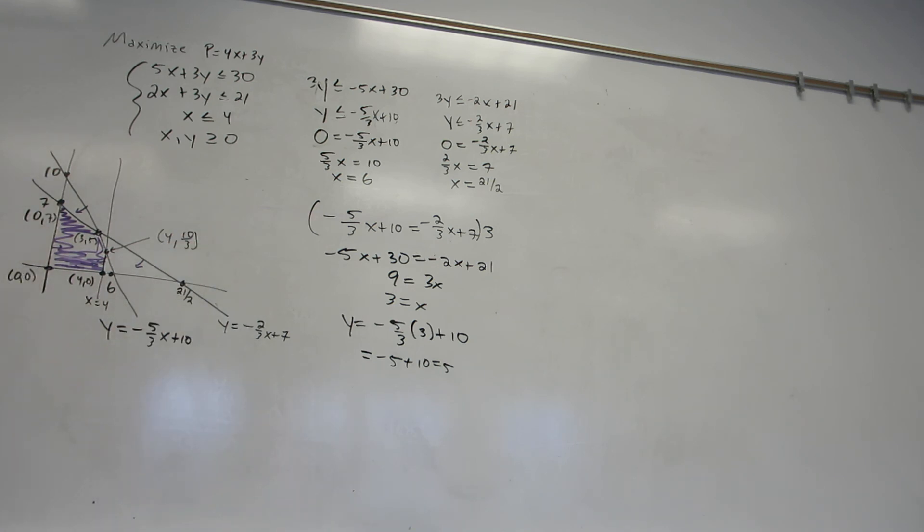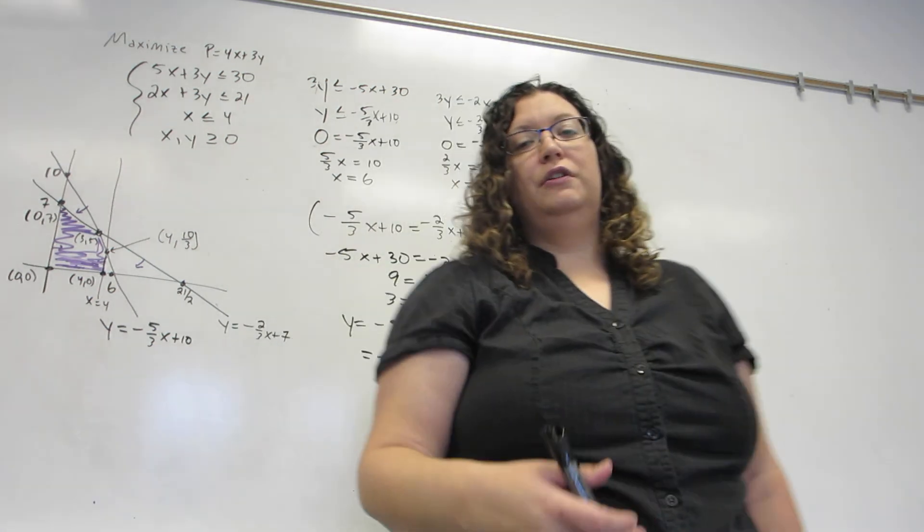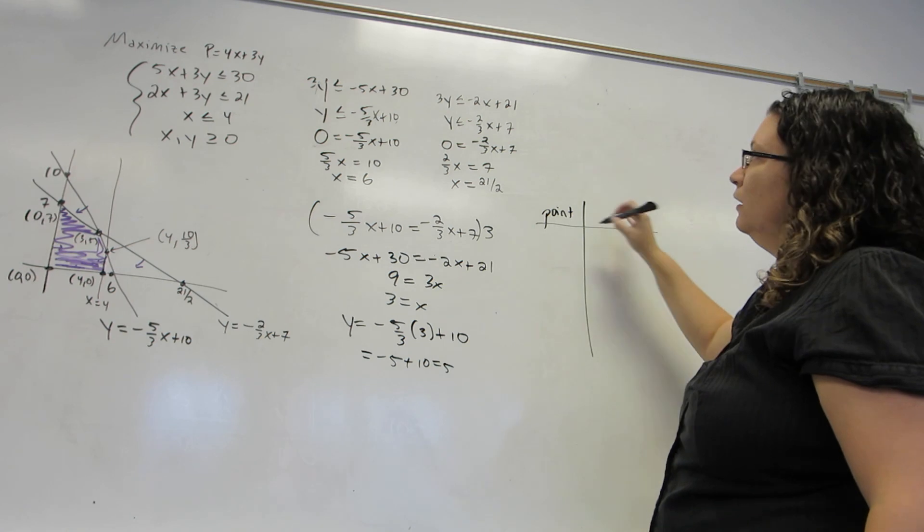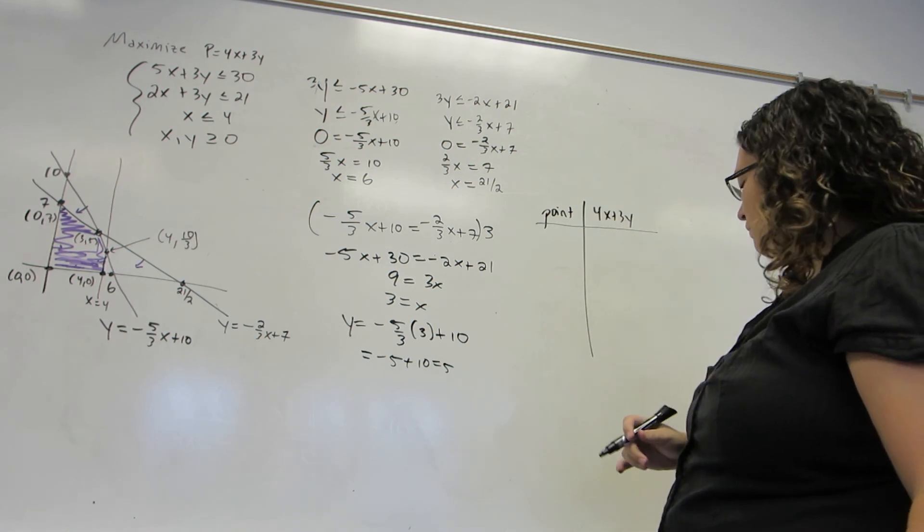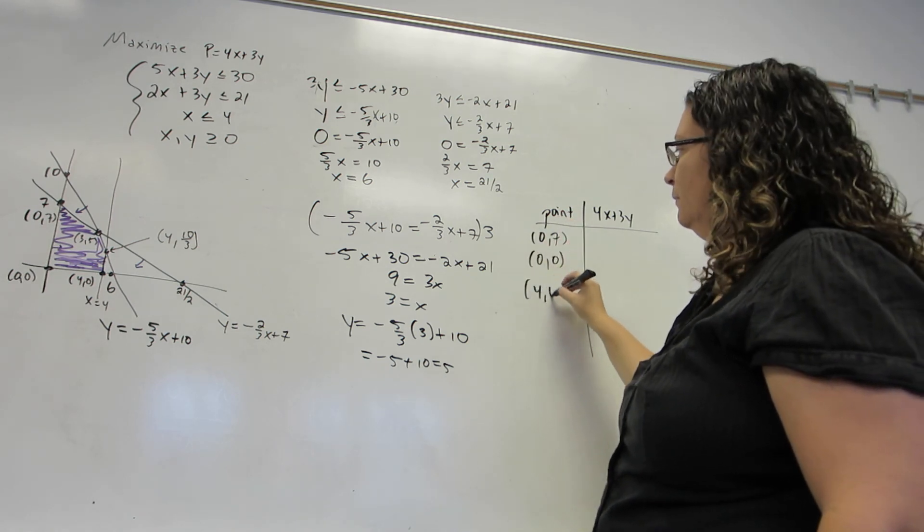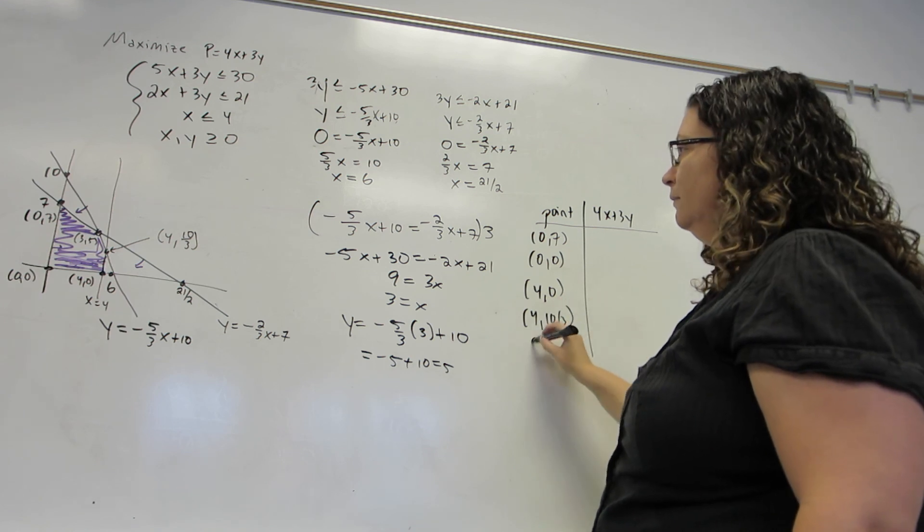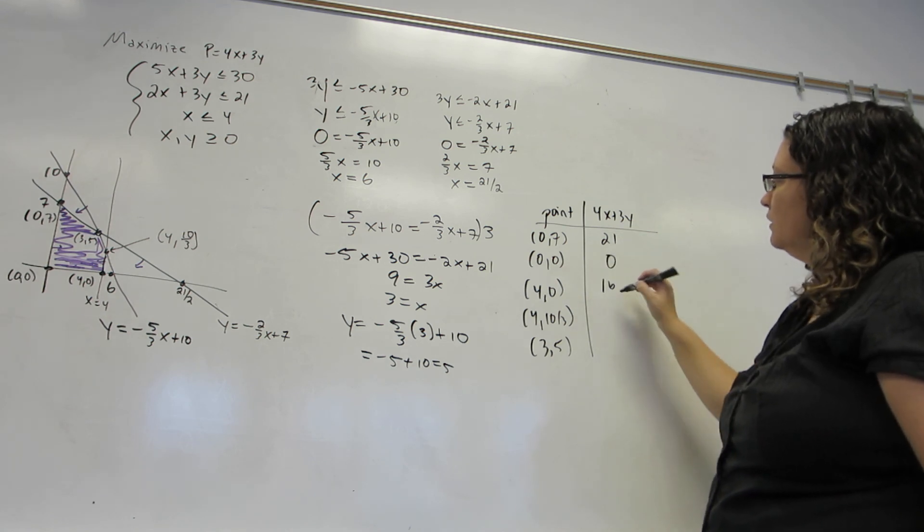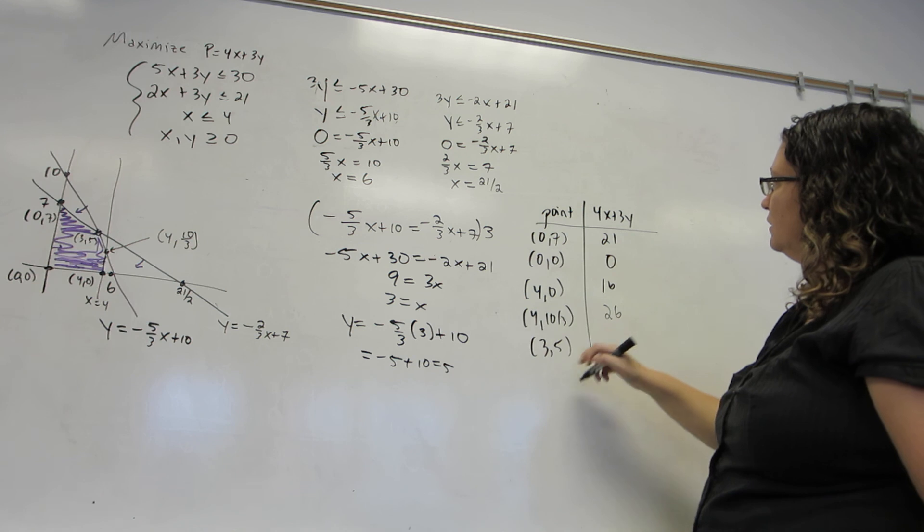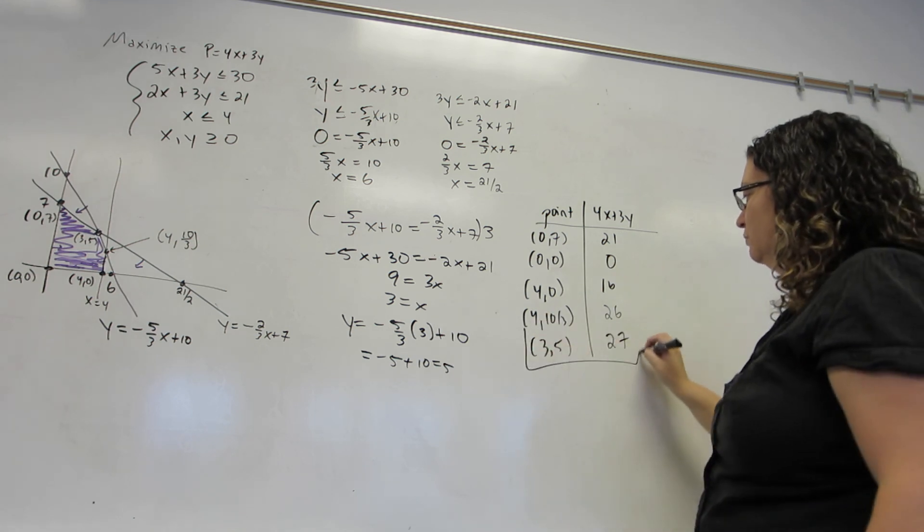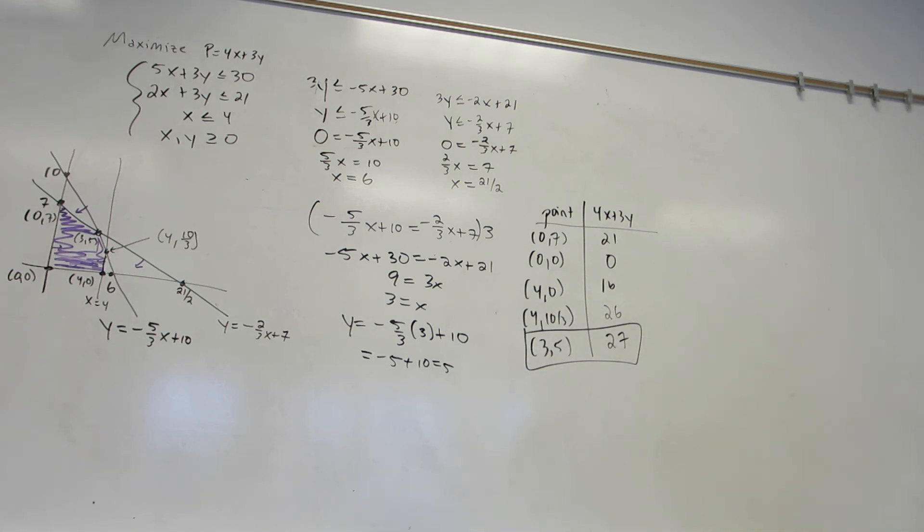Okay. All right. The last step is to actually find, in this case, the maximum. So I'm going to make a table. And for each of them, I'm going to compute the value of the objective function. Placing all my points here. And then plug them in. I get 21, 0, 16, 26, 27, which means this is the place where the maximum occurs. And the answer to the problem is the point 3, 5.